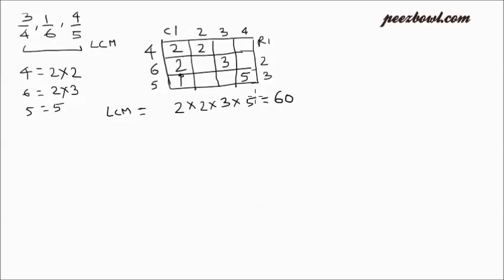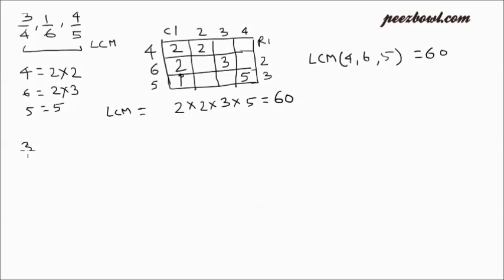This gives us 60. So the LCM of 4, 6, and 5 is 60. Now we need to rewrite all three fractions — 3 upon 4, 1 upon 6, and 4 upon 5 — in such a way that their denominator becomes 60.